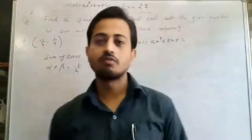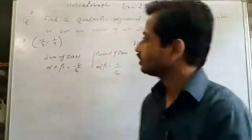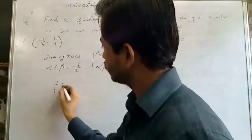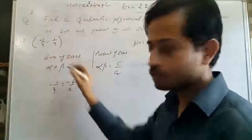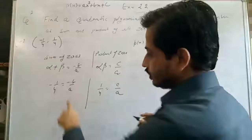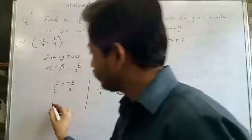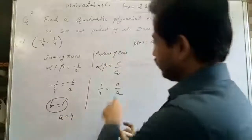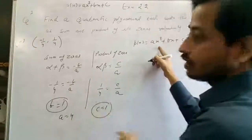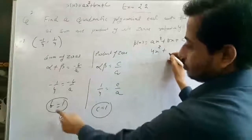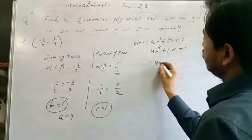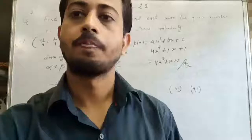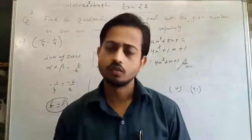Part 5: sum = -1/4, product = 1/4. Alpha + beta = -1/4 = -B/A, so B = 1, A = 4. Alpha·beta = 1/4 = C/A, so C = 1, A = 4. Polynomial: 4x² + x + 1. Part 6 (4, 1) is simple — do it yourself.